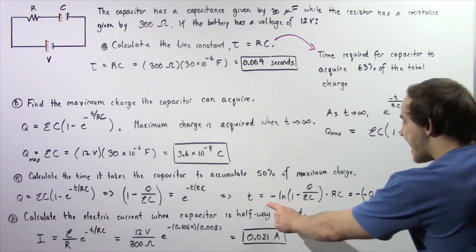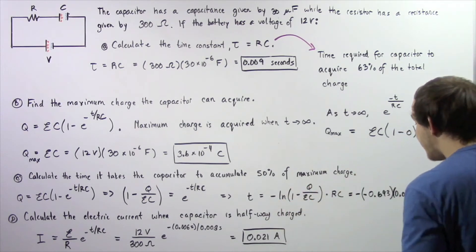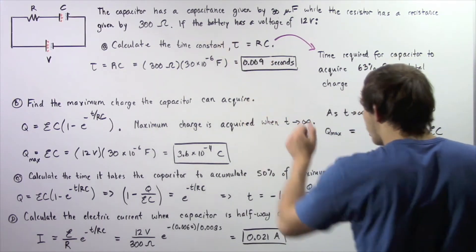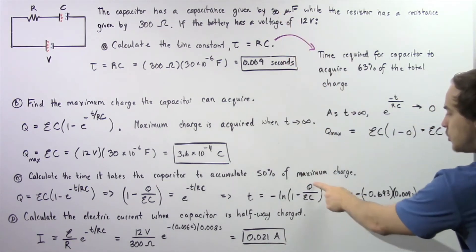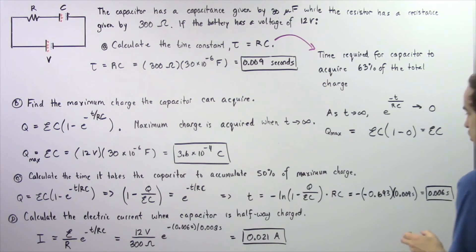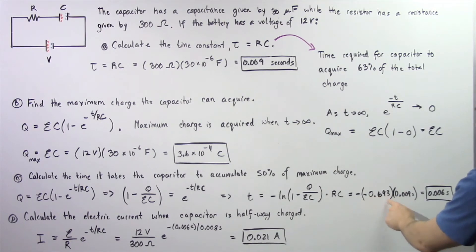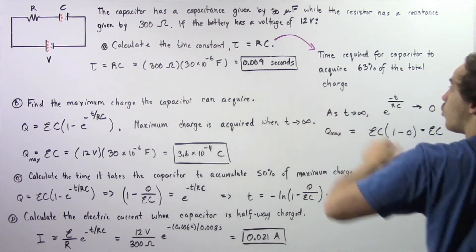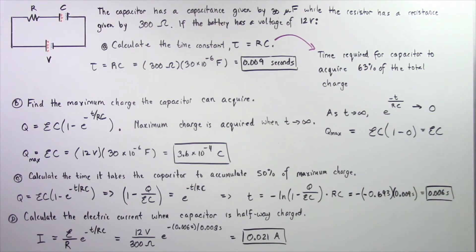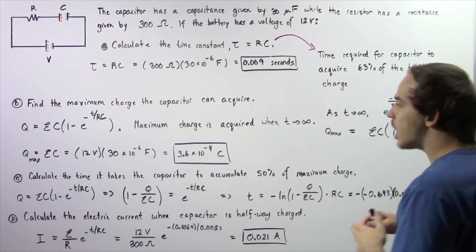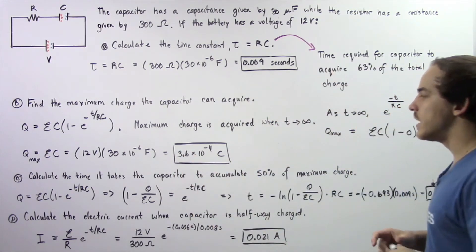We compute the natural log of the inside, which is negative 0.693. Multiplying negative times negative 0.693 by tau of 0.009 seconds gives us approximately 0.006 seconds. So it takes about 0.006 seconds for our capacitor to accumulate 50% of the maximum quantity of electric charge.